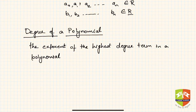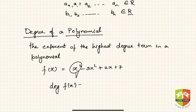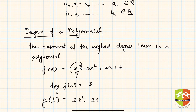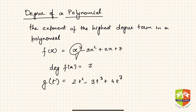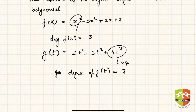For example, if f(x) = x³ − 3x² + 2x + 7, the highest degree term is x³, so the degree of f(x) is 3. Similarly, if g(t) = 2t² − 3t³ + 4t⁷, the highest degree term is 4t⁷, so the degree of g(t) is 7.